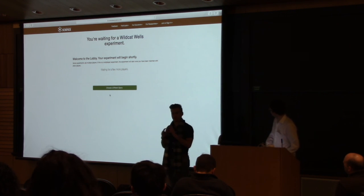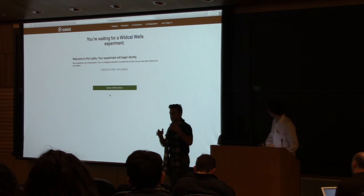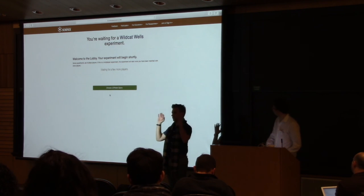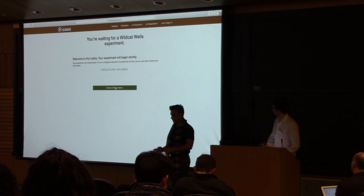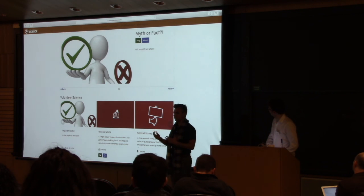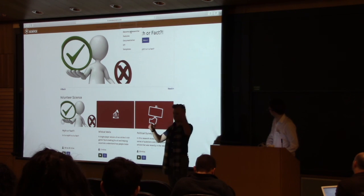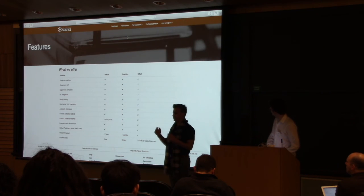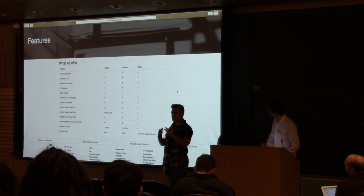But they also have functionality which can create what's called a section page, which is where your particular organization can create its own subsection of Volunteer Science, so that all just your particular studies show up there. They have a bunch of data management tools, and most of the recruitment happens either through organic channels or even recruitment through Mechanical Turk. They're going to have some infrastructure for doing a little bit of participant management.